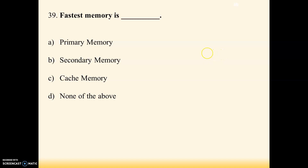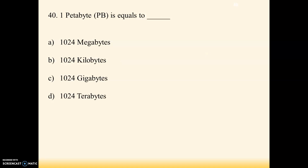Next question: fastest memory is — options are primary memory, secondary memory, cache memory, none of the above. Cache memory is the answer. Cache memory is the fastest and most expensive memory among the different types of memory.